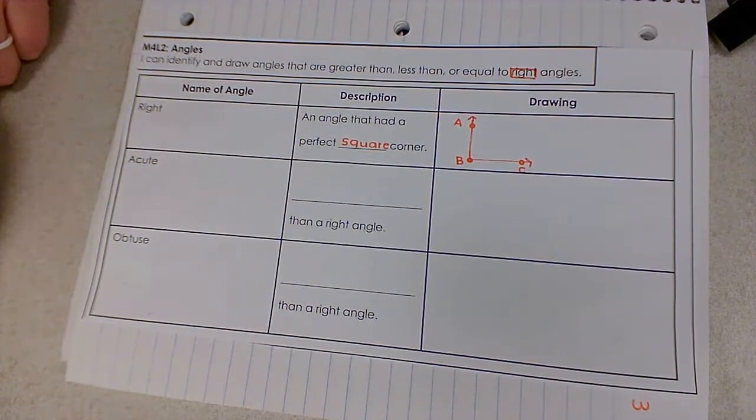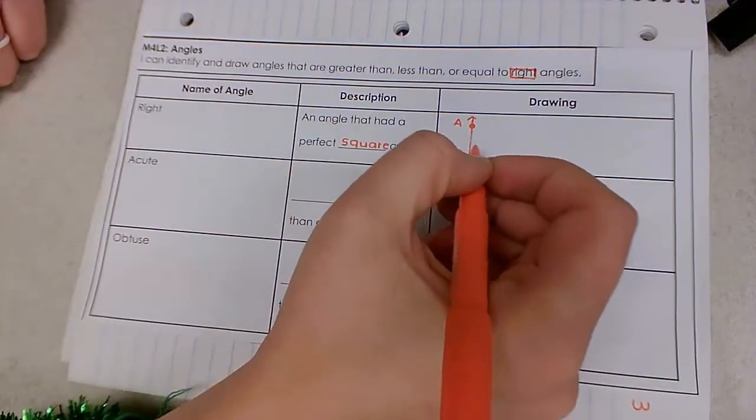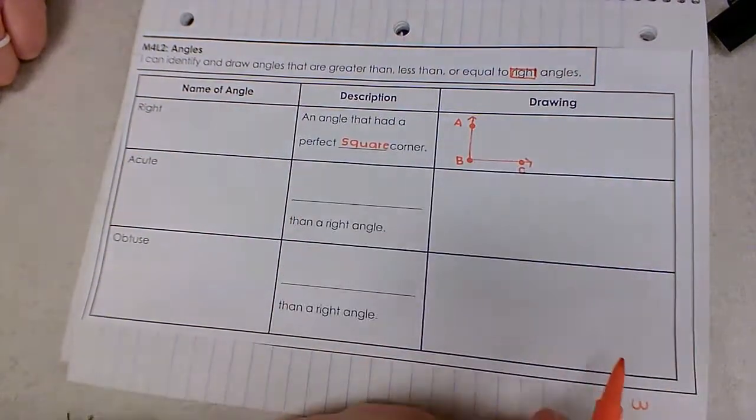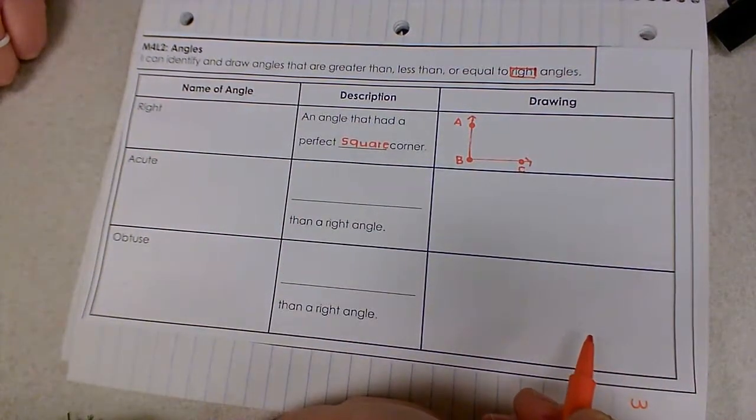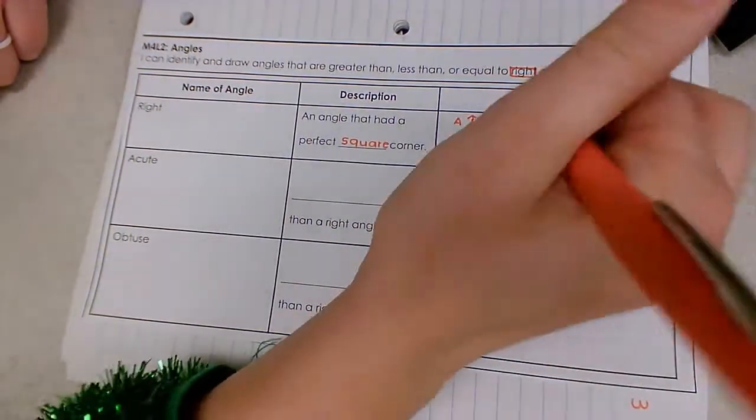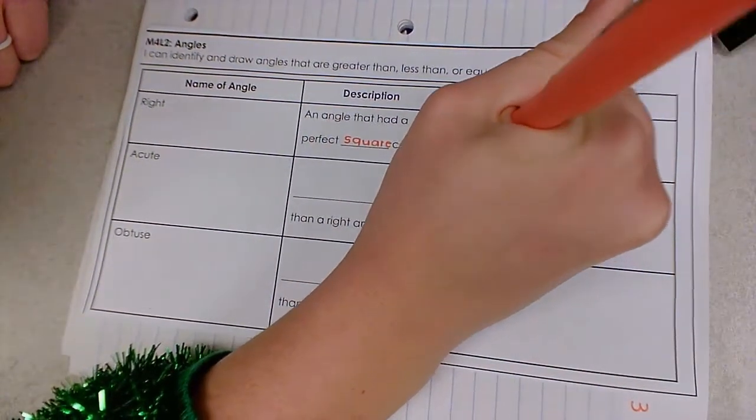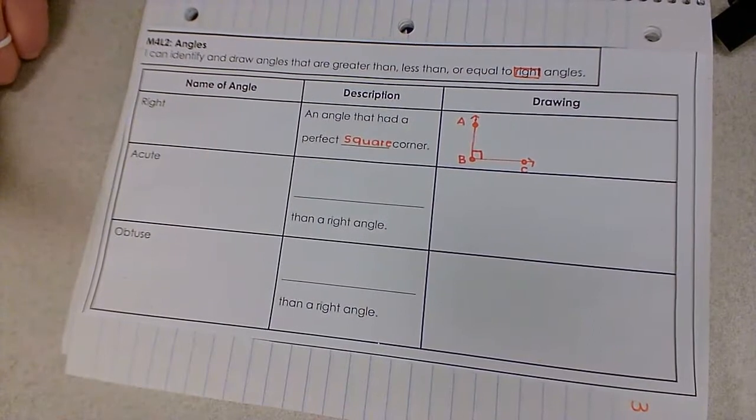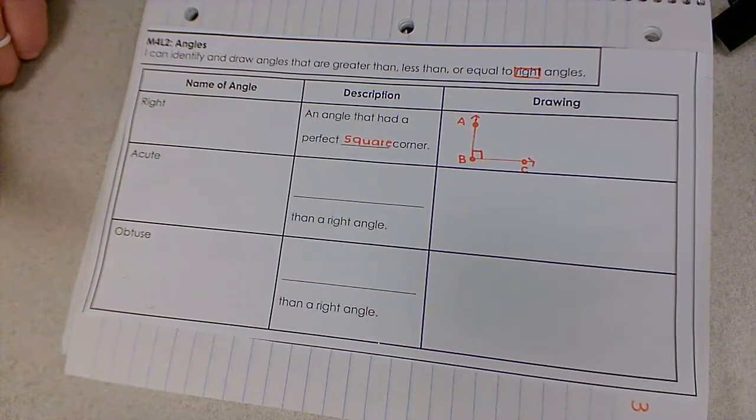You might remember that yesterday when we marked an angle we used like a curved circle. When we have a right angle that's a perfect square corner we show it by marking it with a square like this. Other angles use a curve but when it's a right angle we use a square.